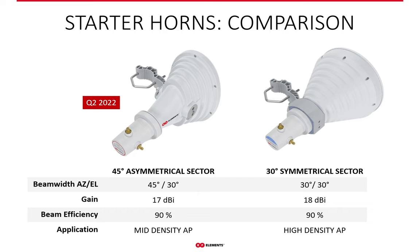Both Starter Horn A45 and Starter Horn 30 are access point antennas for dense collocation scenarios. Their gain is similar, but the azimuth beam width is 45 degrees for the A45 and 30 degrees for the STH-30. Their beam efficiency is very high for great noise rejection capability. The main difference is that the Starter Horn A45 is suitable for middle density access point applications, while the Starter Horn 30 is suitable for high density coverage due to the narrower radiation pattern.